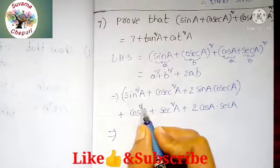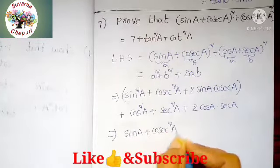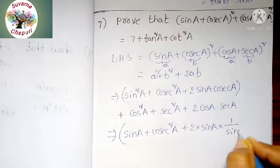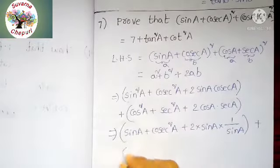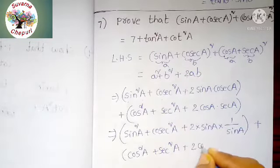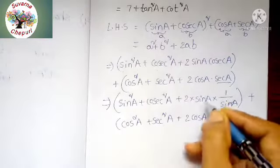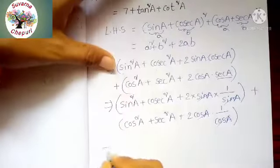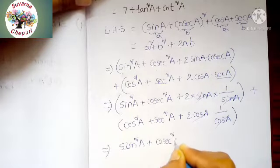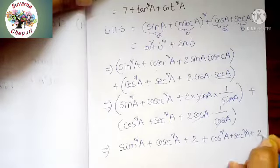Next step: sin squared A plus cosecant squared A plus 2 into sin A into cosecant A. Cosecant A means 1 by sin A. Plus cos squared A plus secant squared A plus 2 cos A into secant A, which is 1 by cos A. Here sin A and sin A get cancelled. Cos A and cos A also get cancelled. Remaining: sin squared A plus cosecant squared A plus 2, plus cos squared A plus secant squared A plus 2.